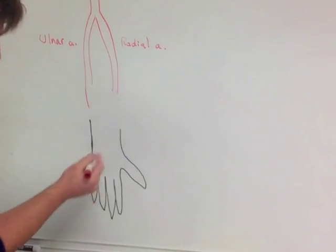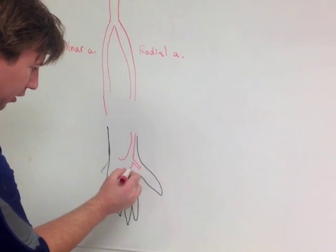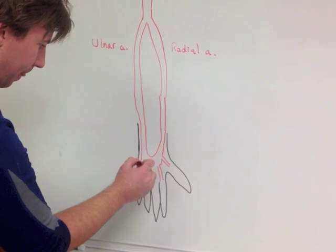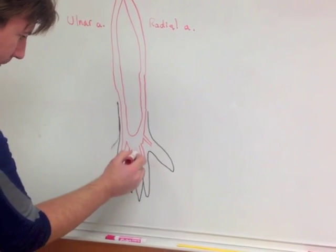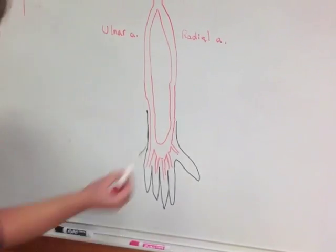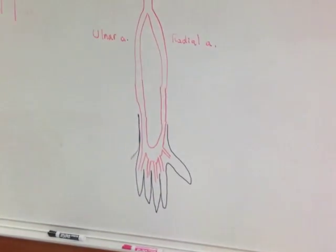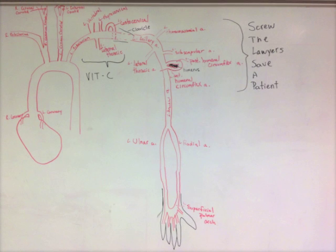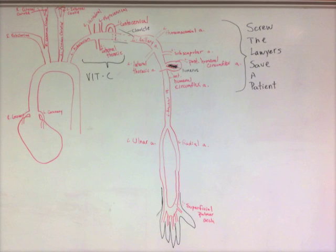We're going to get a superficial palmar arch, which is an anastomosis between the radial and ulnar arteries. It's going to look like this. So these two arteries are supplying blood to the same feature. So this is our superficial palmar arch, and then we get digital arteries for each of the digits which are being supplied with blood.